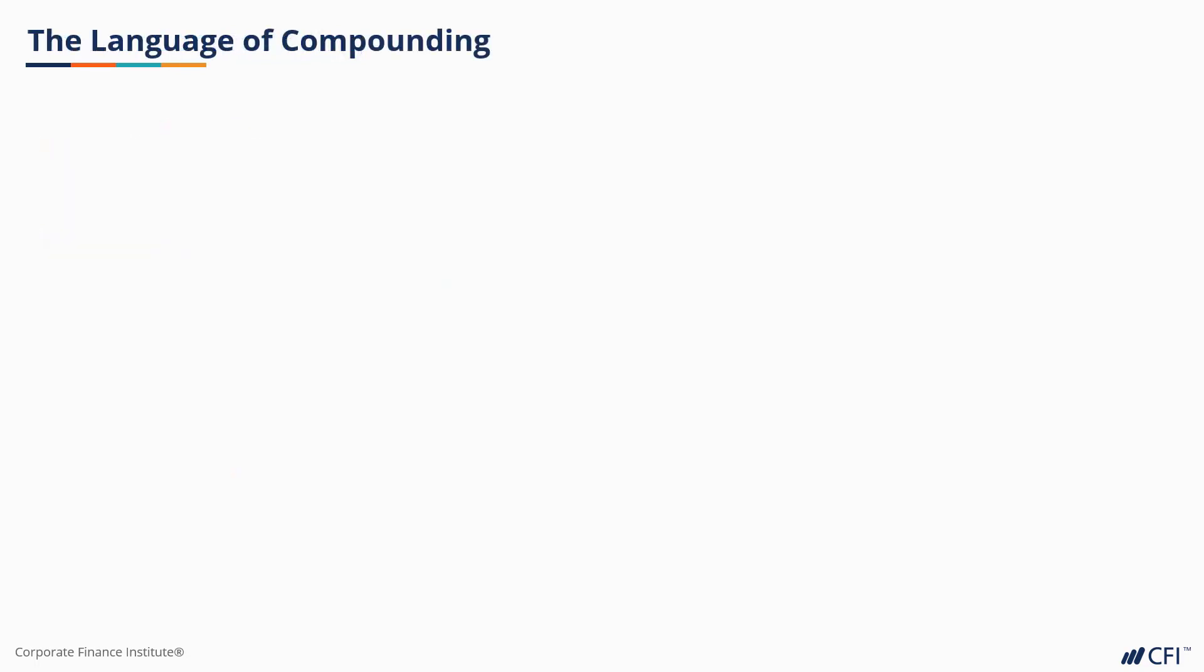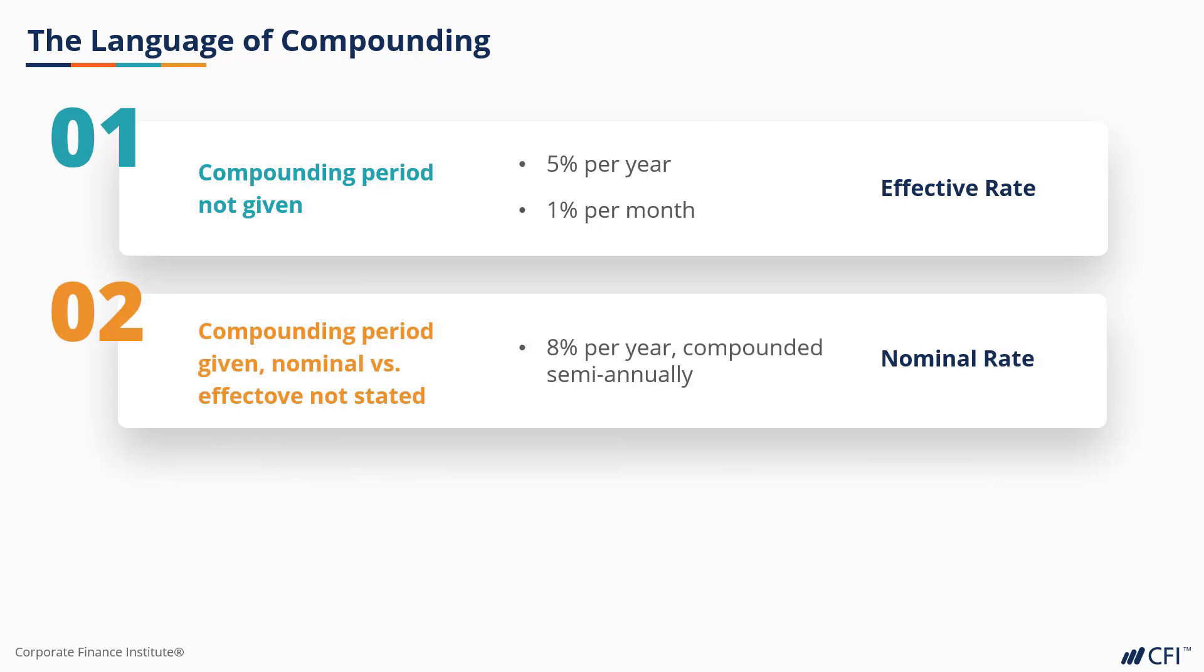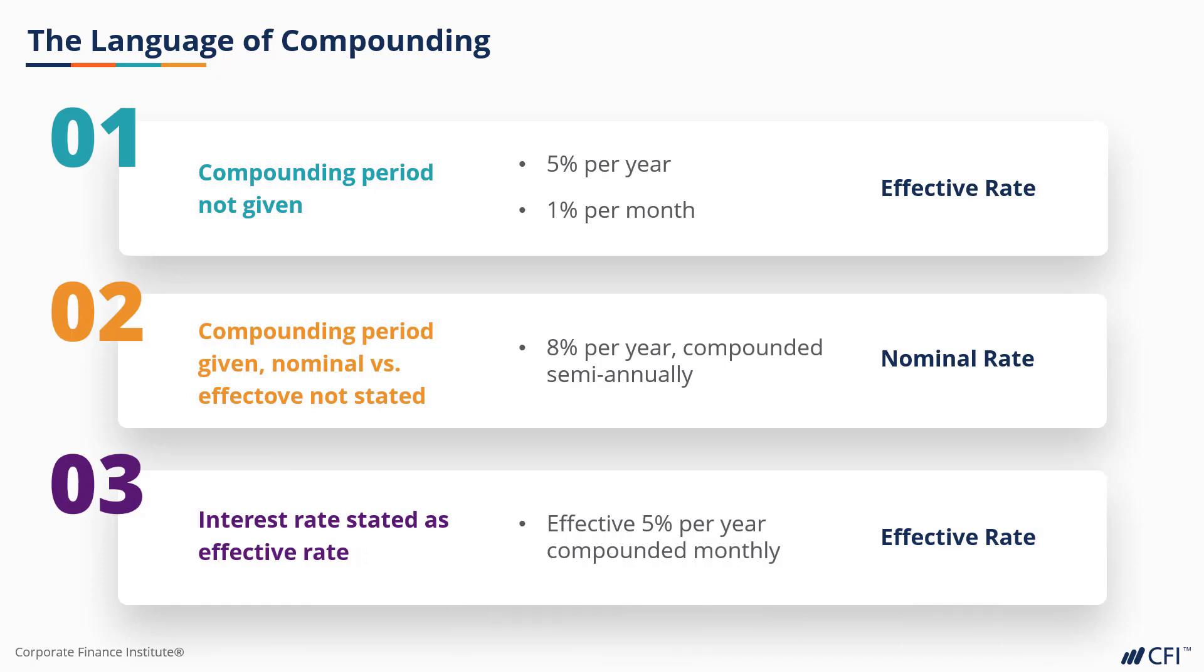This table shows how the language used is important to understand whether we're dealing with nominal or effective rates. When no compounding period is stated, it's an effective rate, with compounding assumed to be equal to the stated time period. 5% per year is an effective 5% compounded annually. 1% per month is an effective 1% per month compounded monthly. When a compounding period is given without stating whether the rate is nominal or effective, it's assumed to be nominal. 8% per year compounded semiannually is a nominal 8%, meaning the effective rate is going to be higher than the 8% stated. When an interest rate is stated as an effective rate, that's simply an effective rate. Please note that the nominal rate in this case is going to be lower than 5% per year.